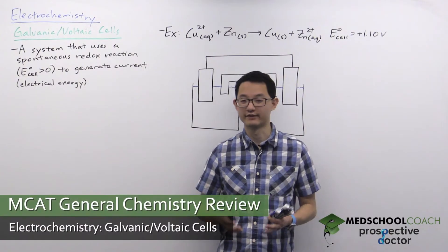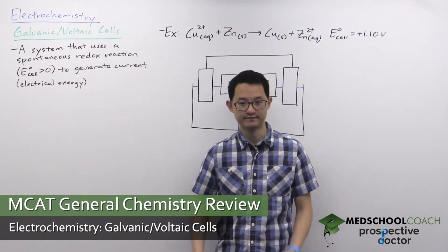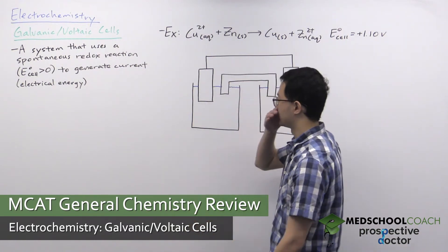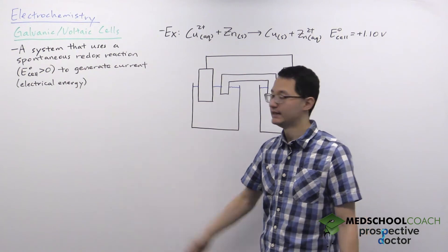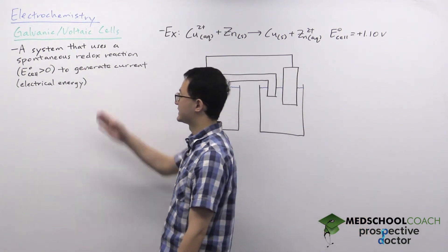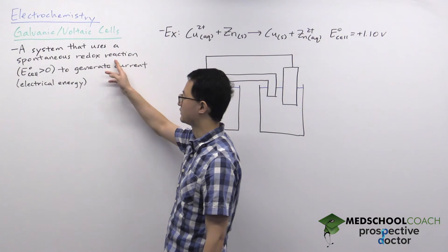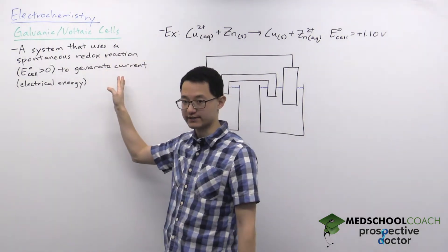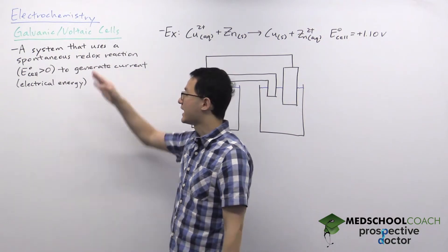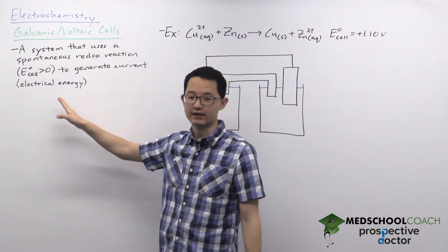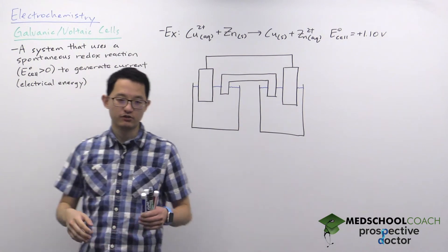In this video we're going to cover galvanic cells or voltaic cells. Galvanic cells and voltaic cells are two names for the same thing — a system that uses a spontaneous redox reaction to generate current. Essentially, this is a system that turns chemical energy into electrical energy.